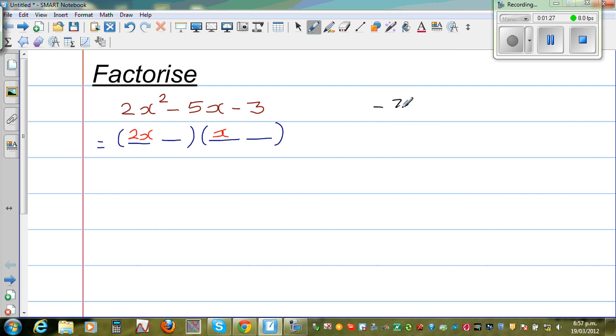So let me write the numbers. Negative 3 you can write as negative 3 times 1, or it can be negative 1 times 3. These are two ways in which you can write. Now you have to select which are the numbers, how are you going to put the numbers. That's the main tricky part here.